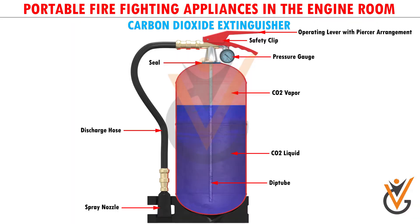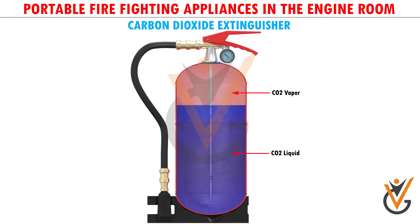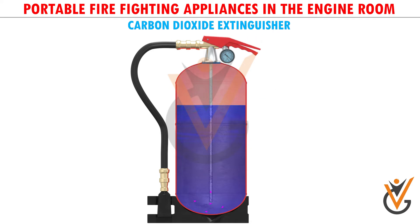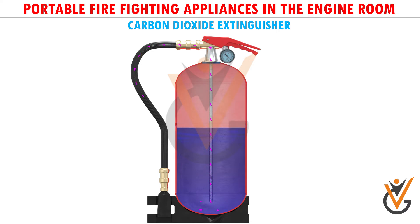Parts of the carbon dioxide extinguisher: carbon dioxide is stored in liquid form under pressure. A central tube acts as an outlet for carbon dioxide gas. A plunger attached to a bursting disc at one end and a trigger at the other is used to release the carbon dioxide gas. The liquid changes to gas as it comes out of the extinguisher through a hose.